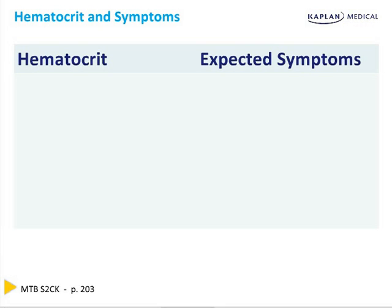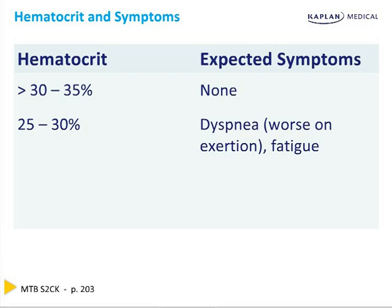The symptoms of anemia are entirely based on what the hematocrit is and the underlying condition of that patient. If you have a generally healthy person with no underlying medical conditions, they will feel nothing at a hematocrit of 30 to 35, and they won't even feel a hematocrit of 25 to 30. You would only start to feel a hematocrit of 25 to 30 if you had underlying heart and lung disease.